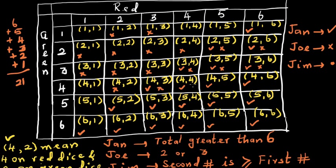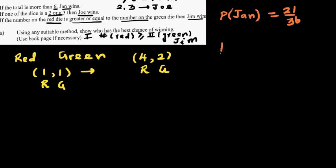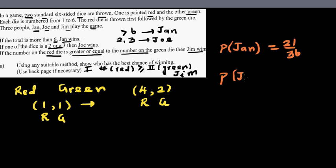This is Joey, not Joey. So now let's count the crosses. There is no seemingly pattern, so we need to count. So you got 1, 2, 3, 4, 5, 6, 7, 8, 9, 10, 11, 12, 13, 14, 15, 16, 17, 18, 19, 20. So out of 36, there are 20 ways in which Joey can win. So the probability of Joey winning is 20 out of 36.